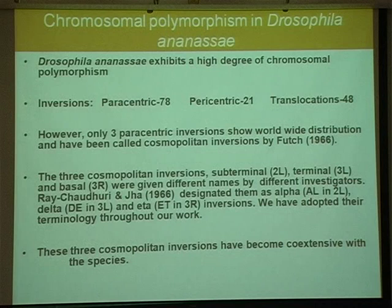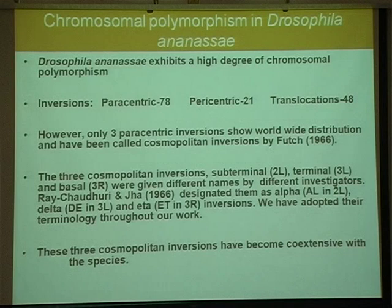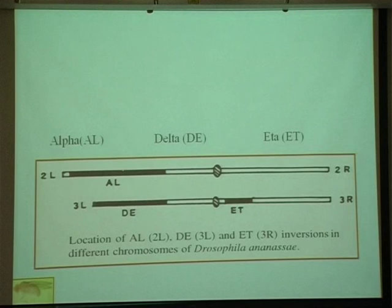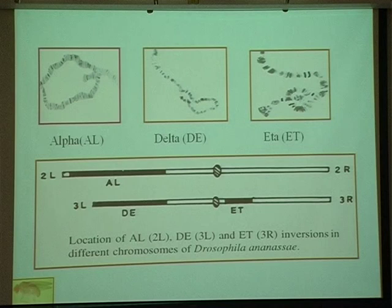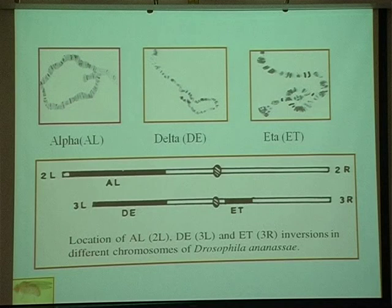These inversions have become co-extensive with the species — wherever I go to collect ananassae, I find these inversions, though the frequency may vary. These are the three inversions: one is found in 2L (left arm of second chromosome), another in 3L, and the third in 3R. They vary in size and have been called alpha, delta, and eta inversions — all three paracentric, located in chromosomes 2 and 3.